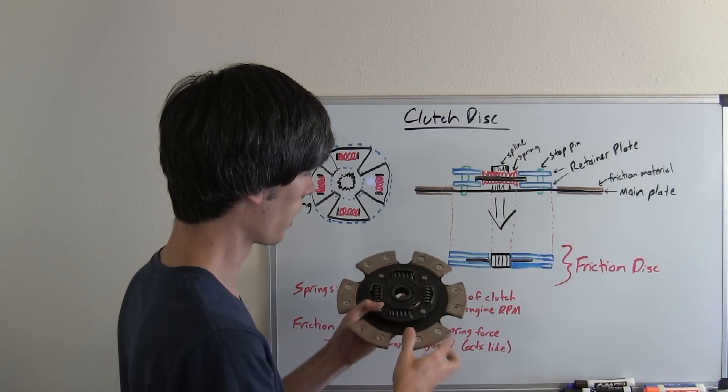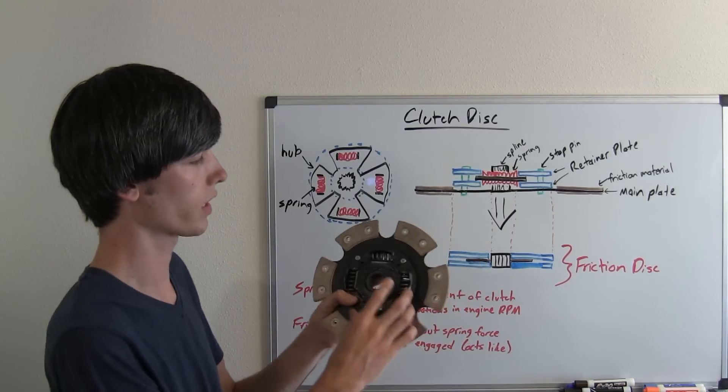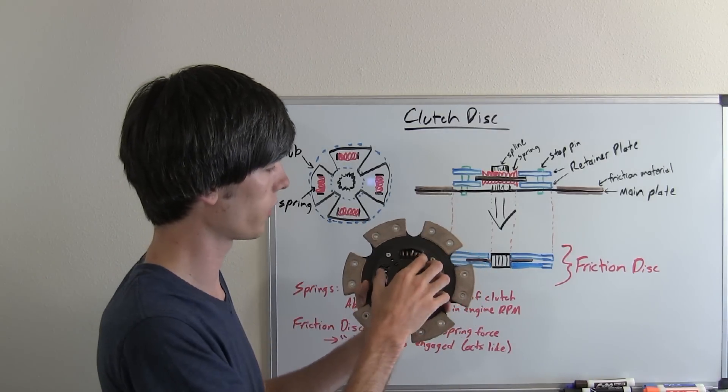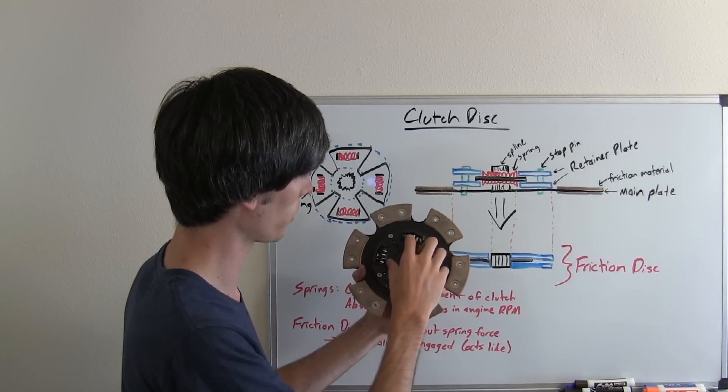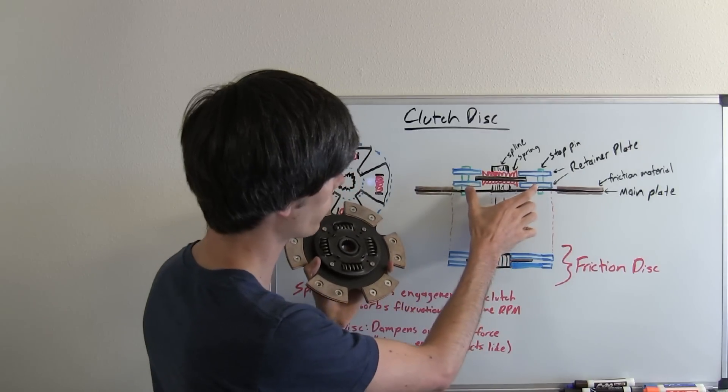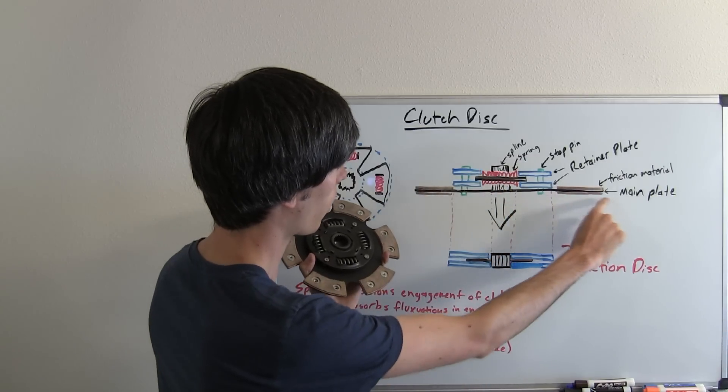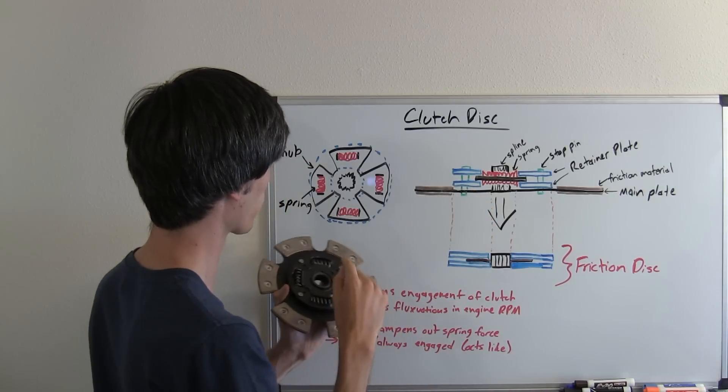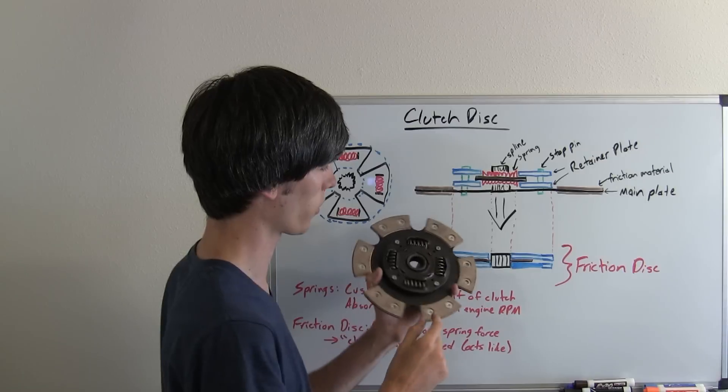So basically we've got these springs in here and the purpose for these springs is to help cushion the engagement of the clutch. So basically any fluctuations that you have in engine RPM, these springs are going to help absorb. So how do you compress these springs? I mean it seems like they just rotate with it. Well, basically what we've got going on inside is here's this retainer plate with these stop pins. These stop pins are connected to this main plate, but they are not connected. There is no direct connection between this hub and these retainer plates. Instead, that connection comes through the spring.